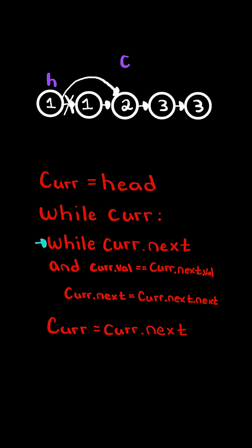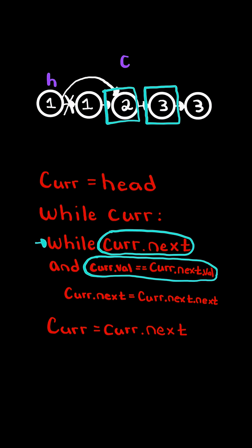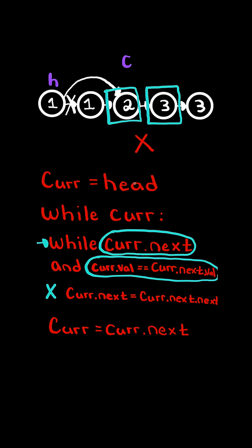We check the condition for the inner loop — current.next is not null, but current.value does not equal current.next.value. So we do not go inside the inner loop.